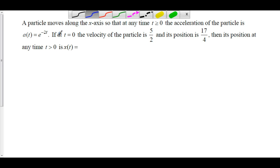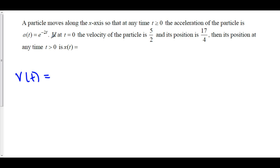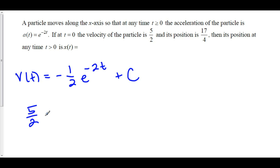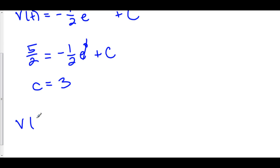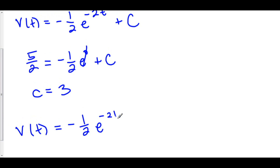If a(t) = e^(−2t), then our velocity is the antiderivative of e^(−2t), which is negative one-half e^(−2t) plus C. Plugging in our initial condition — at t equals 0, velocity is 5 over 2 — we get 5 over 2 equals negative one-half times e^0 plus C. Since e^0 equals 1, we add one-half to both sides, giving C equals 6 over 2, which is 3. So our velocity function is v(t) = negative one-half e^(−2t) plus 3.